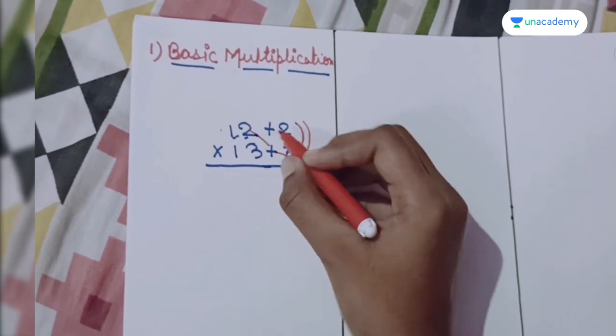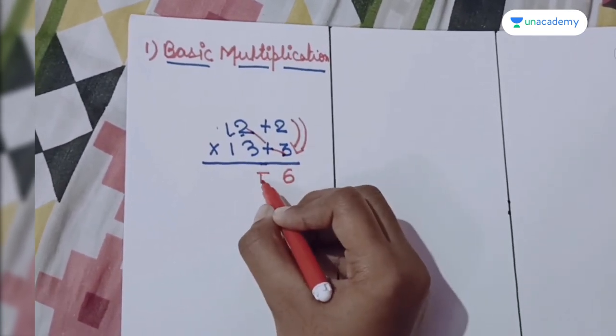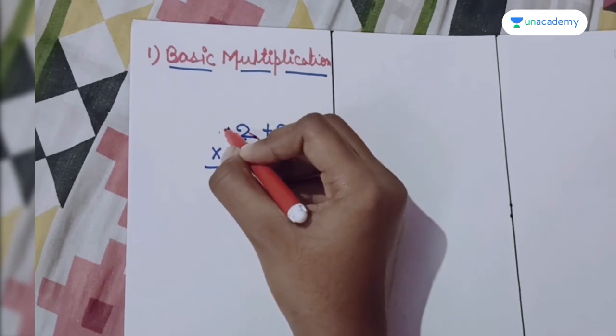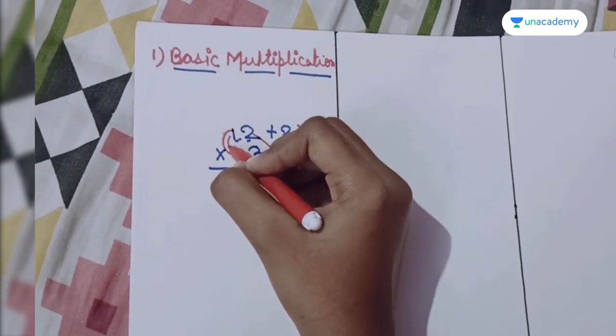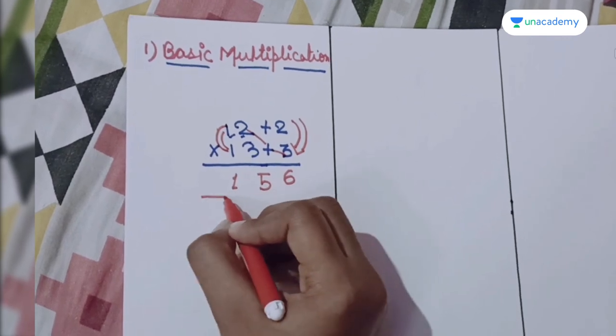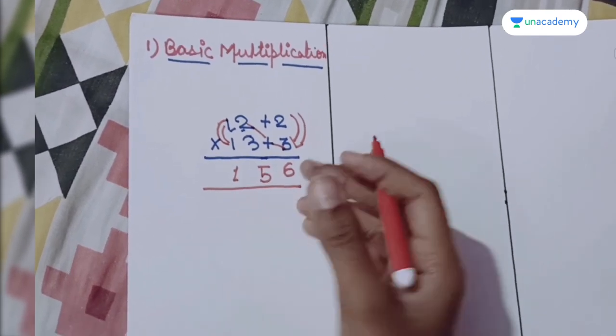That will be 3 plus 2 equals 5. Then we will multiply these two numbers, that will be 1.